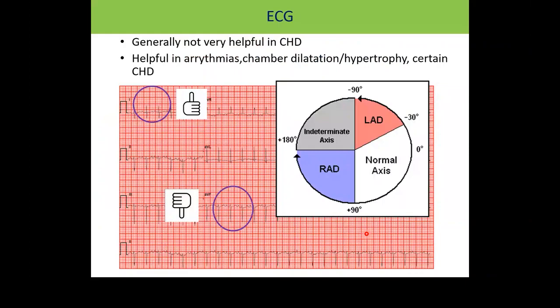ECG is generally not very helpful to diagnose congenital heart disease, but it can help in determining the axis. For example, a newborn with left axis deviation and cyanosis is more in favour of tricuspid atresia. A newborn with features of trisomy 21 and left axis deviation is more in favour of an AV canal defect. ECG is also helpful in arrhythmia management.